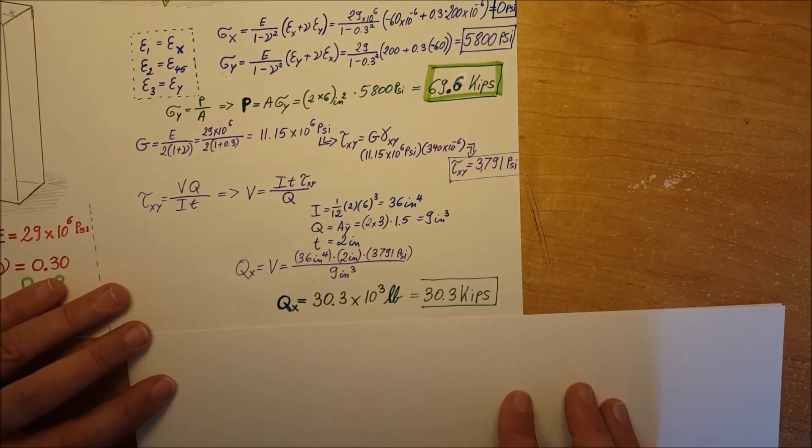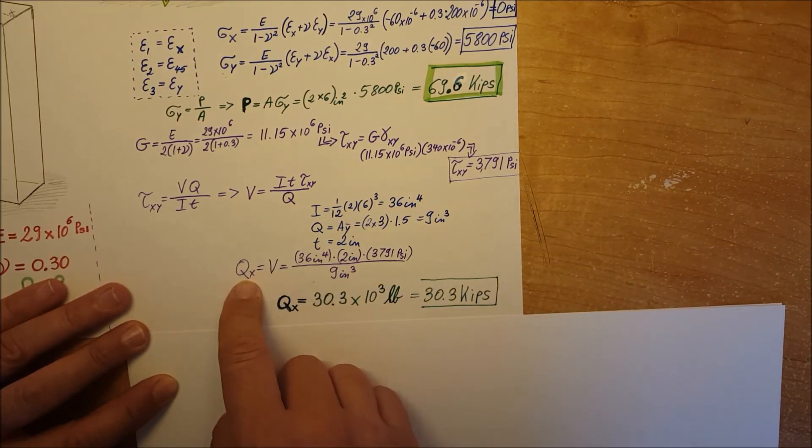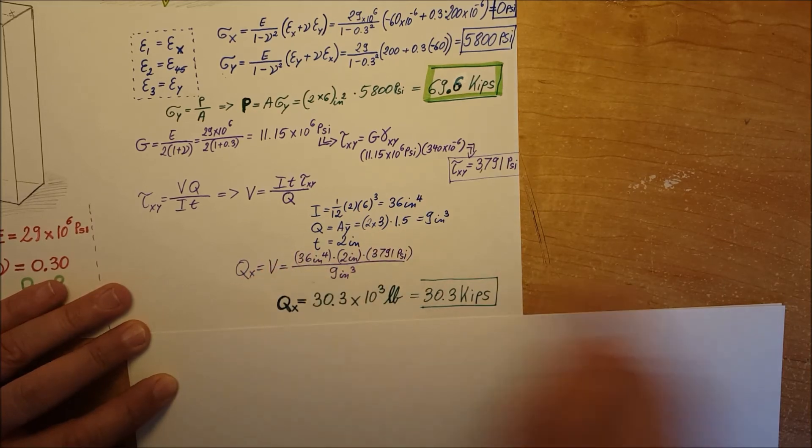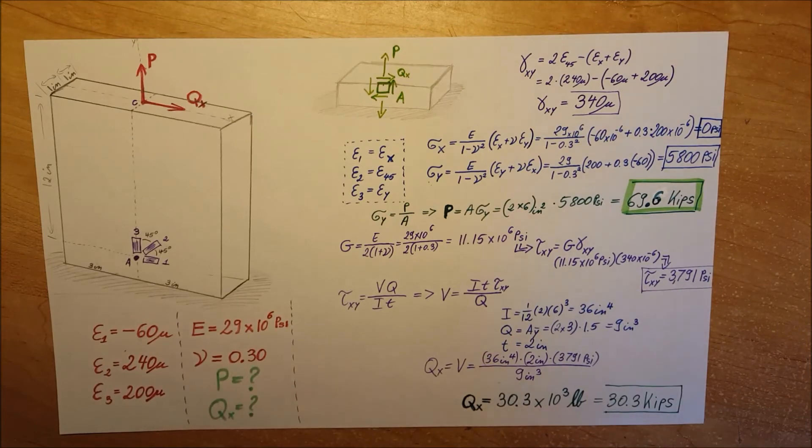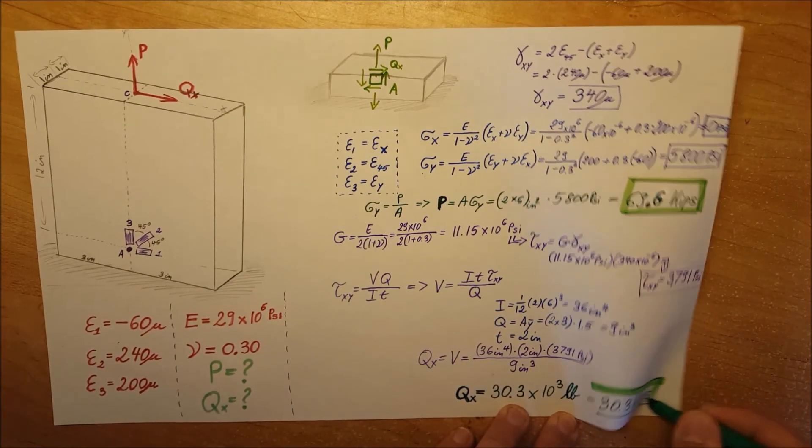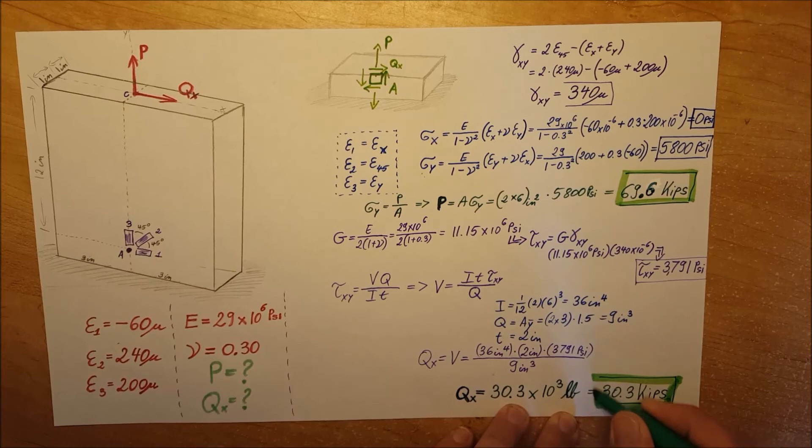Now we have all that we need, so we can plug in into our V, which will be our Qx. Calculate it, and we are able to find our second value right here: 30.3 kips.